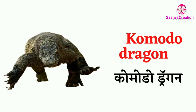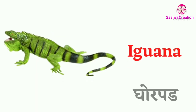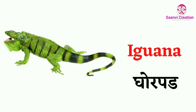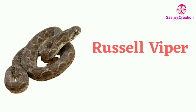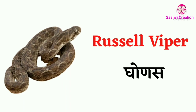Komodo dragon (K-O-M-O-D-O D-R-A-G-O-N) — komodo dragon means 'Komodo Dragon'. Iguana — iguana means 'Ghorpad'. Russell viper (R-U-S-S-E-L-L V-I-P-E-R) — Russell viper means 'Ghonas'.